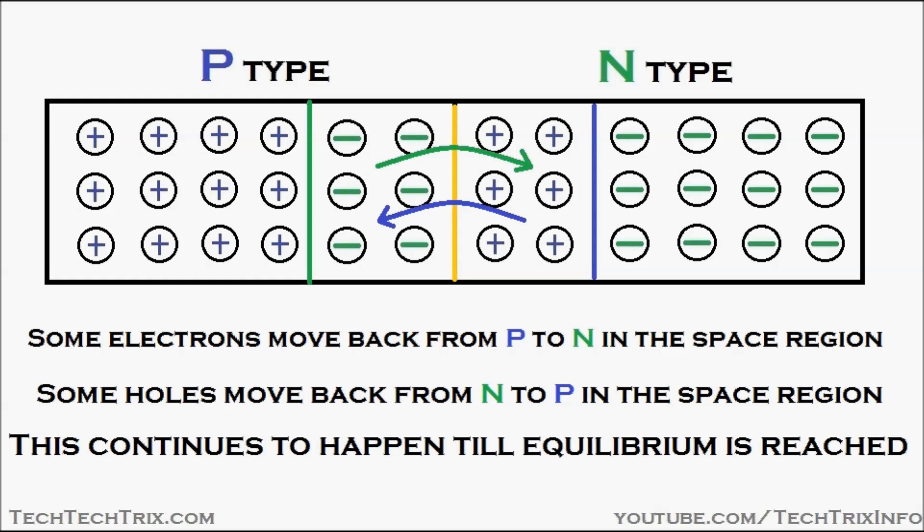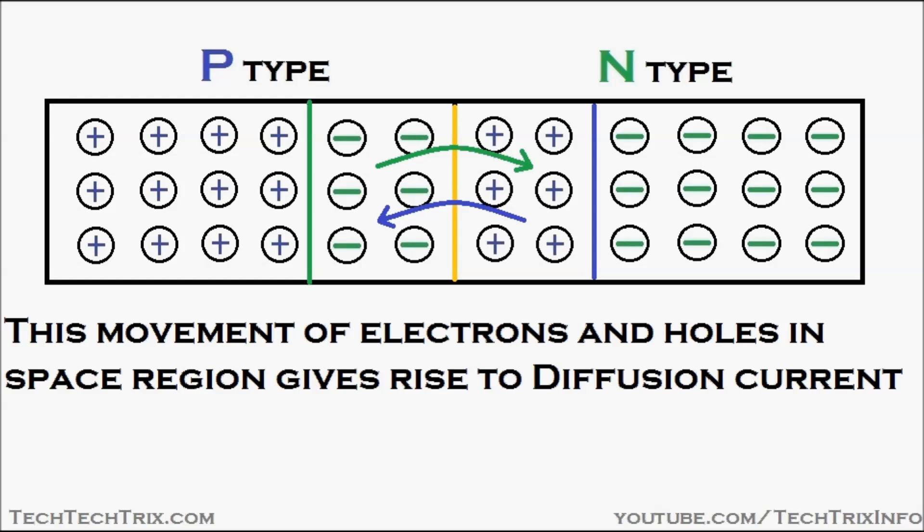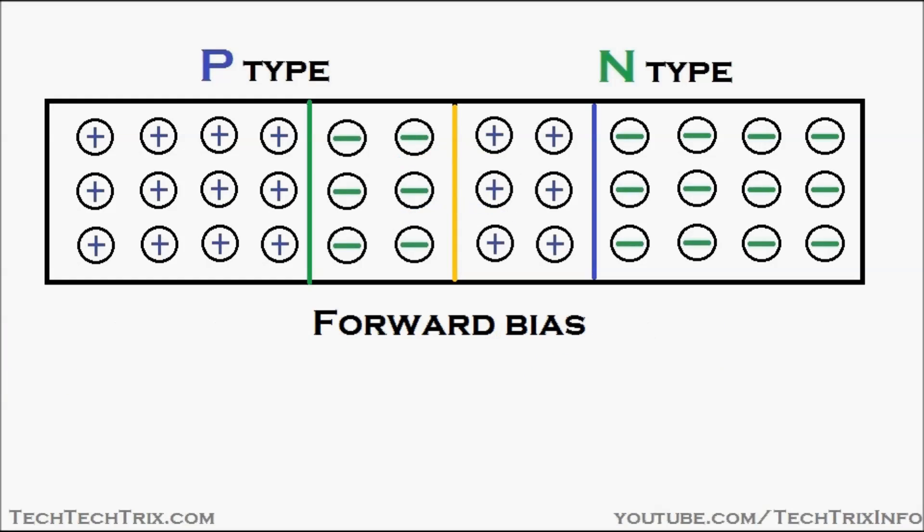This continues to happen until equilibrium is reached at this region. The movement of electrons and holes in the space charge region gives rise to a current, and this current is called diffusion current.